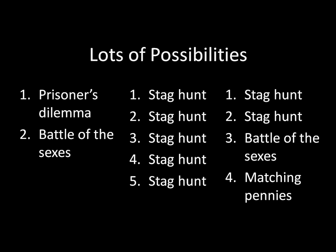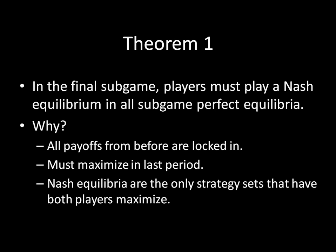Why must we play a Nash equilibrium in the final stage? Because the payoffs from all previous stages — yesterday, the day before — we can't change those when we get to the final stage. Whatever has happened in the past has happened; those payoffs are locked in. We can only maximize our payoffs for the current stage, so we must be maximizing in that last period. If we're both maximizing in that last stage, Nash equilibria are the only way to do that. A Nash equilibrium is a set of mutually optimal strategies: what I'm doing maximizes my payoff given what you're doing, and what you're doing maximizes your payoff given what I'm doing. So that's Theorem 1.